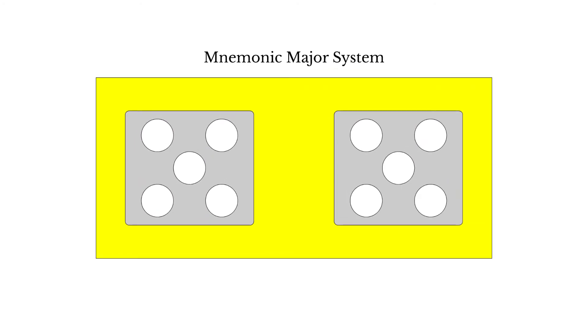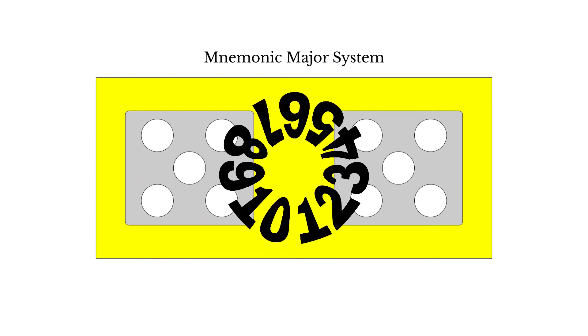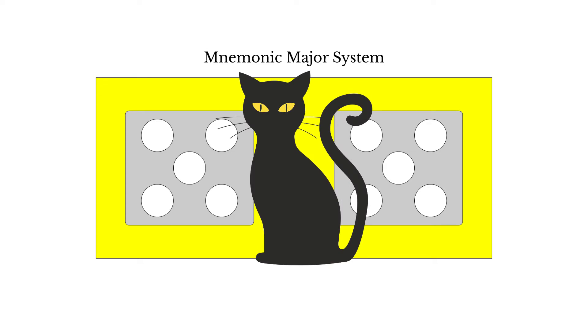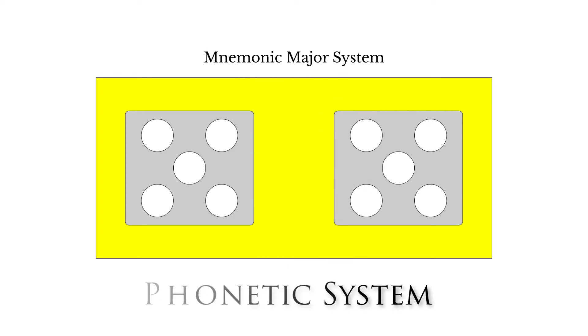The mnemonic major system is a tool for converting numbers, which are difficult to remember, into images, which are easier to remember. It is a phonetic system, which means it works by associating numbers with sounds. By replacing numbers with consonant sounds, you can then supply vowels to create words, which will be easier to remember than the numbers they represent.